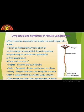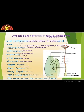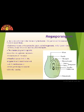Let us see the structure of the pistil. A pistil consists of three parts: stigma, style and ovary. The stigma receives the pollen grains. The style is the elongated slender part below the stigma. The ovary is the bulged part containing the placenta, which is located inside the ovarian locule. The placenta contains the megasporangia or ovules.